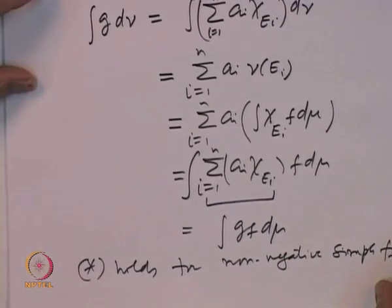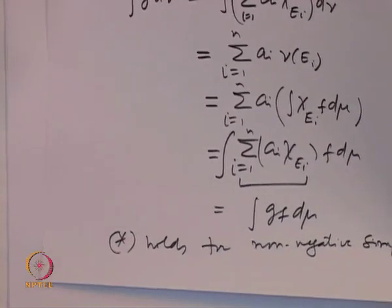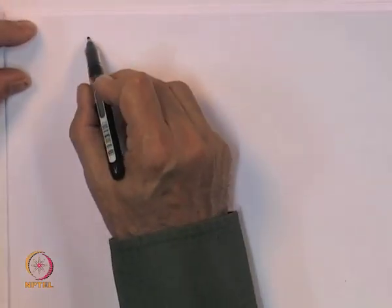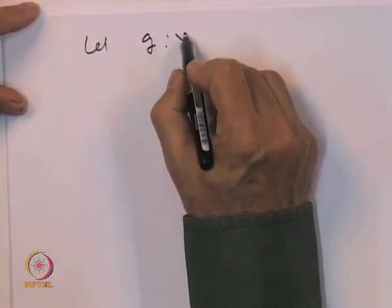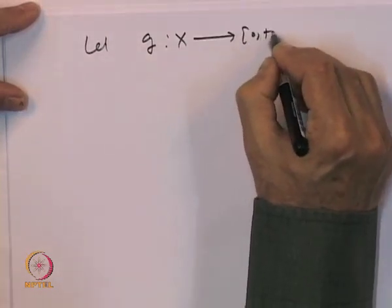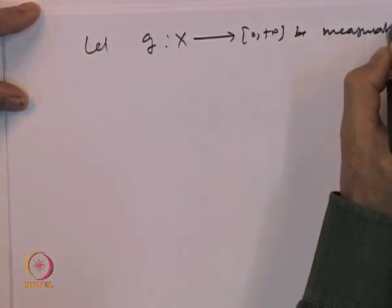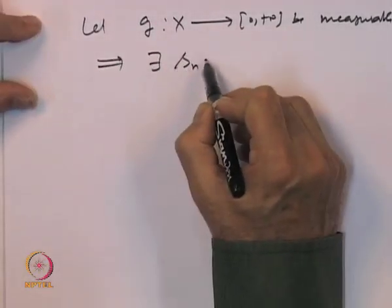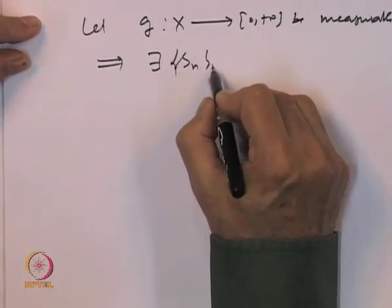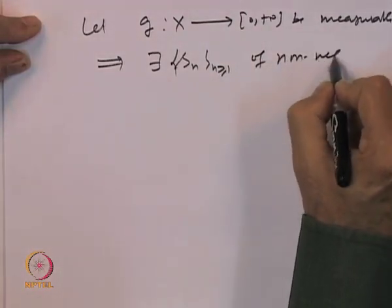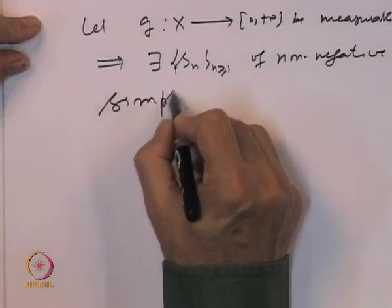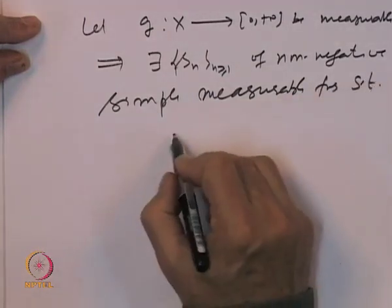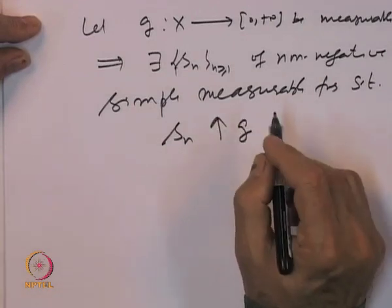Step 3: let G be a non-negative measurable function. Then there exists a sequence S_n of non-negative simple measurable functions increasing to G. An application of the monotone convergence theorem, together with the earlier step for simple functions, gives us that ∫G dν = ∫Gf dμ. This extends the property to all non-negative measurable functions.